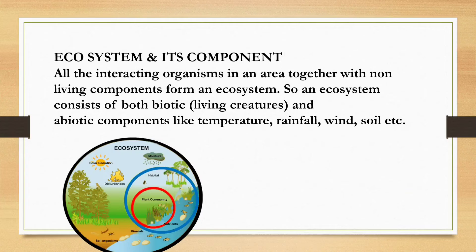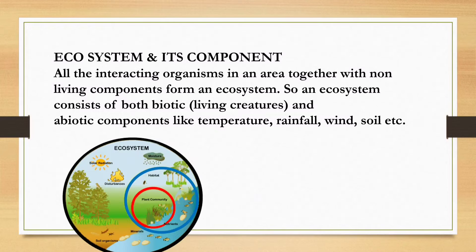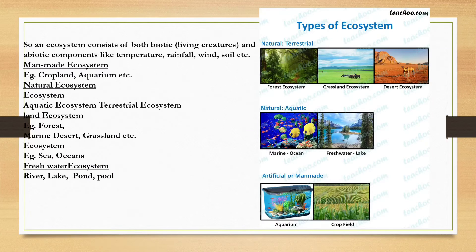Ecosystem and its components: all the interacting organisms in an area together with the non-living components form an ecosystem. An ecosystem consists of both biotic, that is living, and abiotic, that is non-living components. The interaction of biotic with abiotic components is called an ecosystem. Plants and animals take oxygen and water from the environment. Abiotic components include temperature, rain, wind, and soil.